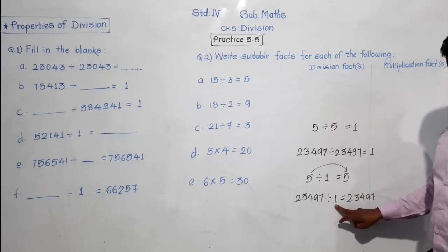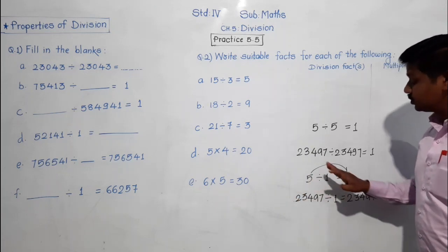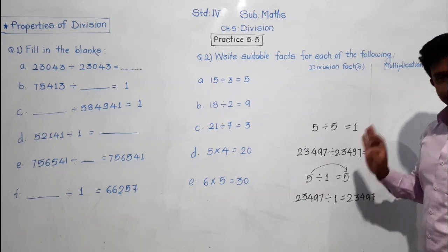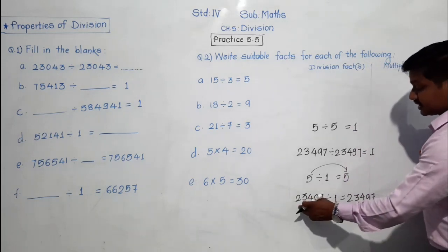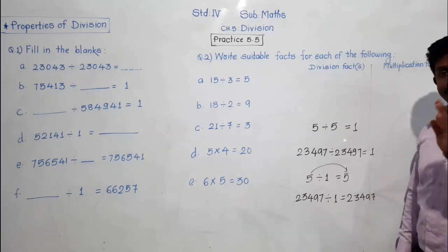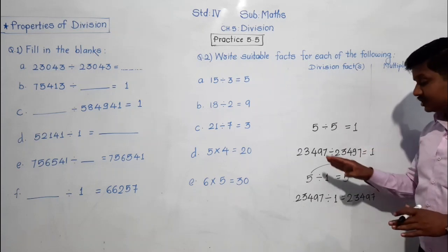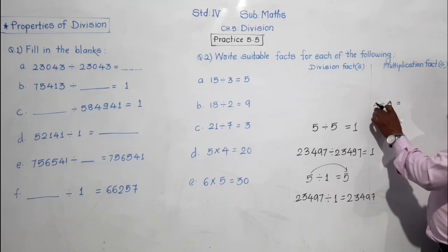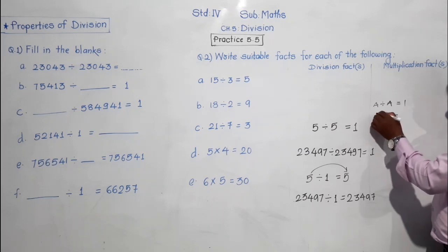Because all numbers are in the table of 1: 1 two is 2, 1 three is 3, 1 five is 5, 1 hundred is 100. Likewise, 1 times 23,497 is 23,497 itself. So any number divided by 1 equals that number itself. To summarize: a divided by a equals 1, and a divided by 1 equals a. These are the two properties of division.